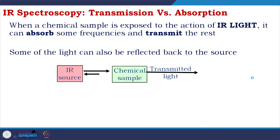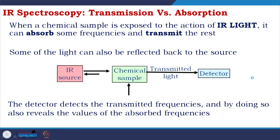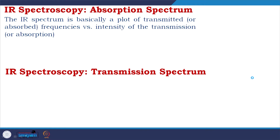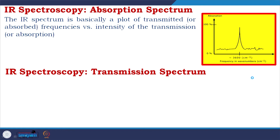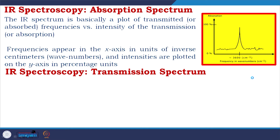The IR source shines on the sample, the transmitted light goes to the detector, and detection happens. The detector detects the transmitted frequencies and also reveals the absorbed frequencies. The IR spectrum is a plot of transmitted or absorbed frequencies versus intensity. Absorption is shown as percentage on the y-axis and frequency in wavenumbers on the x-axis.